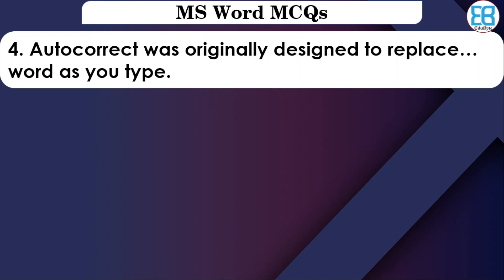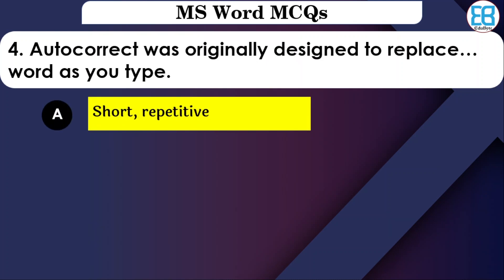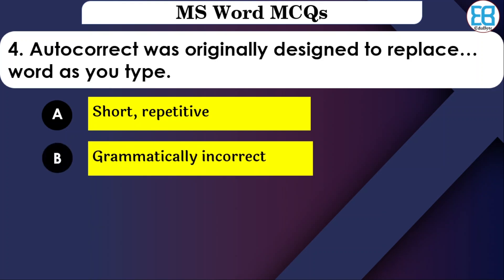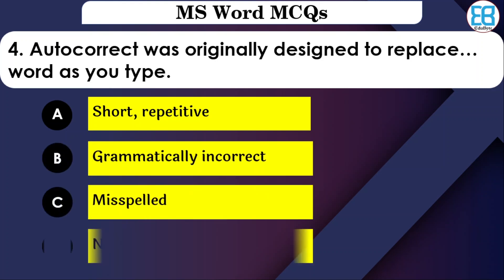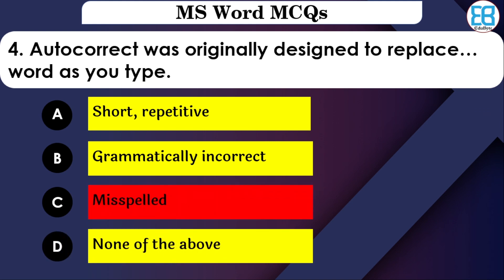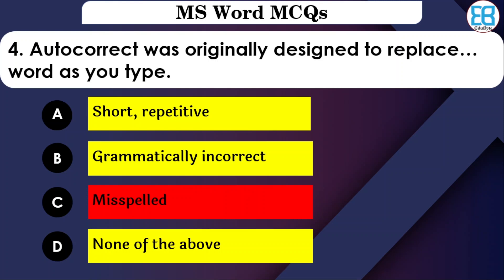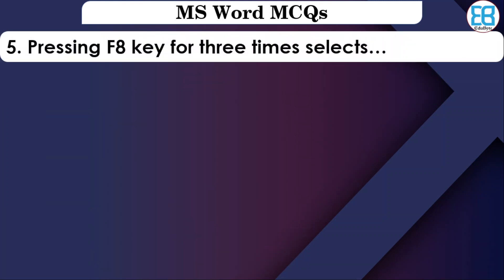Autocorrect was originally designed to replace words as you type. It was designed to replace short or repetitive, grammatically incorrect, misplaced, or unavailable words. The correct option is misspelled — Autocorrect is used to correct misspelled or wrongly spelled words.